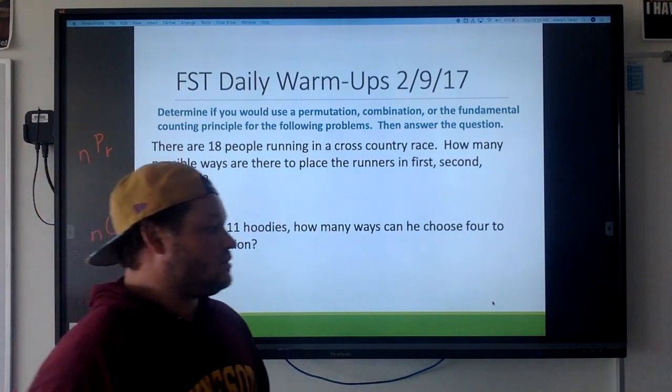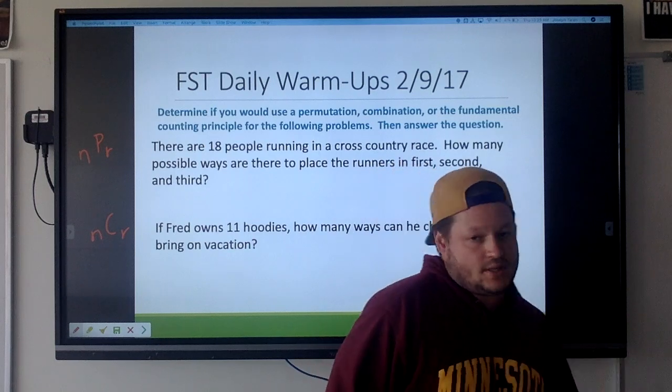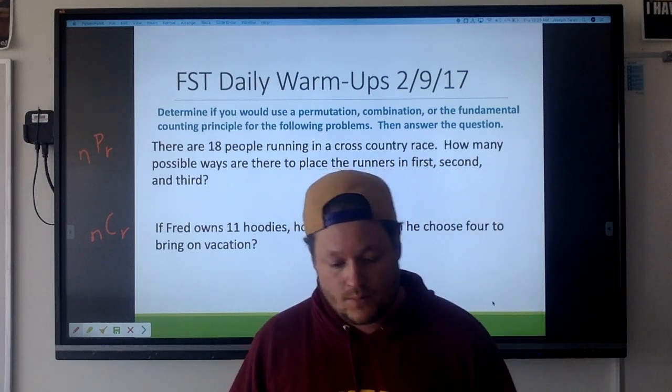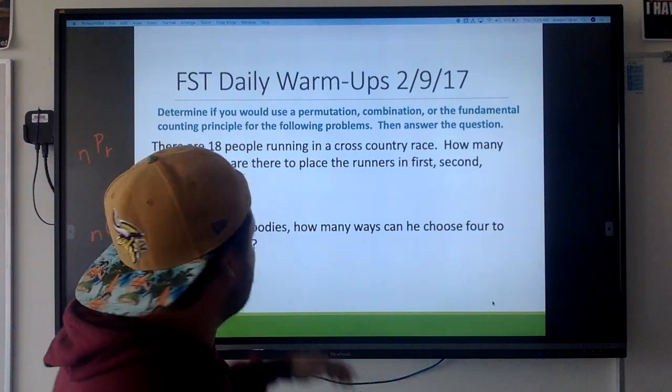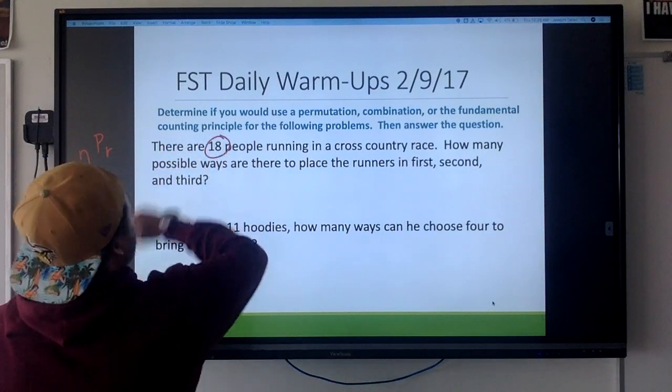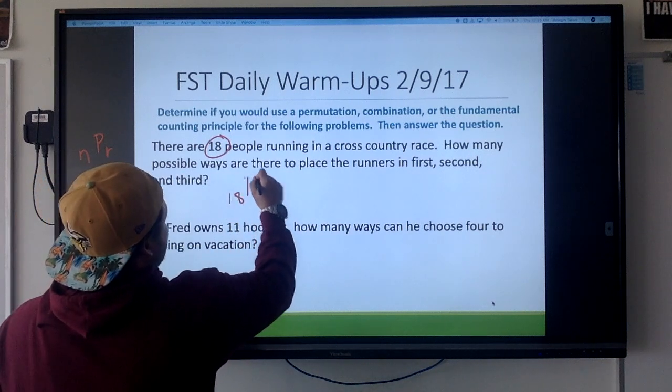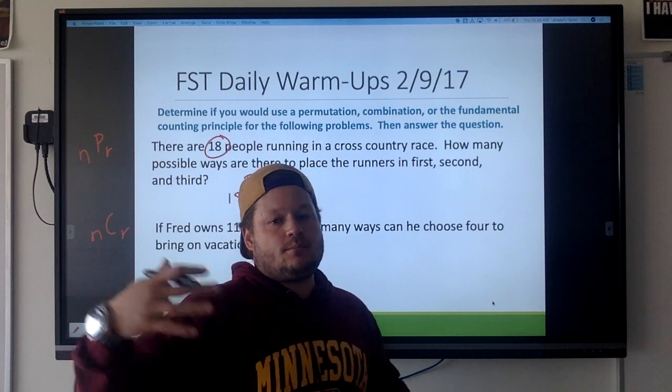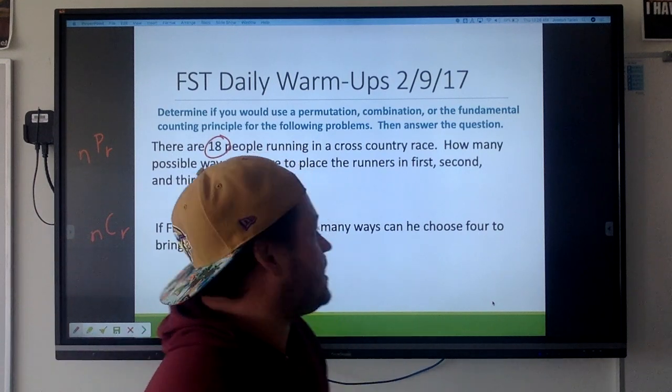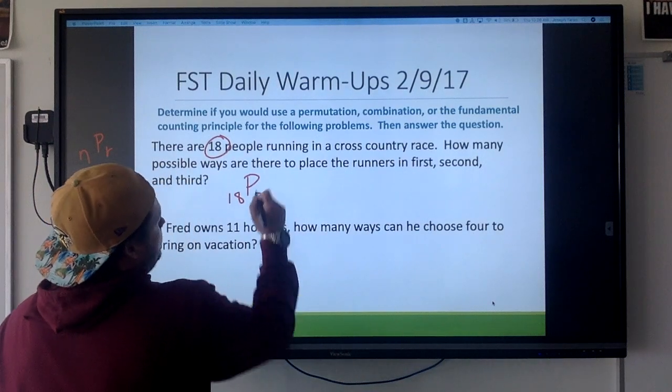Well clearly here order matters, right? There's a difference between getting first place, second place, and third place. So we think, how many people can we choose from? Well there's 18 people running, so that's going to be my n value. We know it's a permutation so I'm going to use P, and how many people are we talking about at a time? We're talking about first, second, and third, so my r is going to be three.